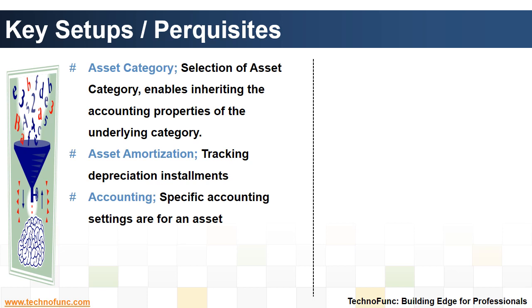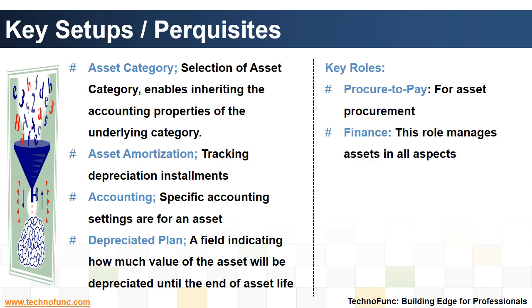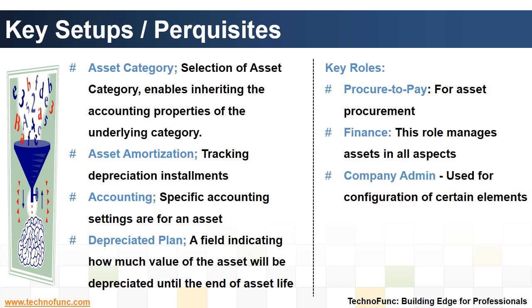Specific accounting settings are defined for an asset. Depreciation plan: a field indicating how much value of the asset will be depreciated until the end of asset life. Key roles required to manage this process are: Procure to Pay, for asset procurement; Finance, this role manages assets in all aspects; and Company Admin, used for configuration of certain elements.